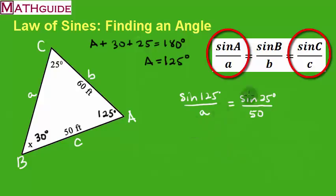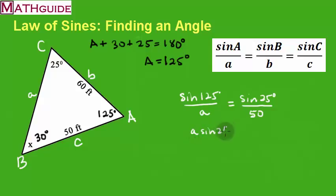Now we cross multiply like we do any proportion. So A times the sine of 25. And we're going to multiply these together, 50. Sine 125. Okay, so we have that set up. Now to calculate for A, we have to divide both sides by the sine of 25.